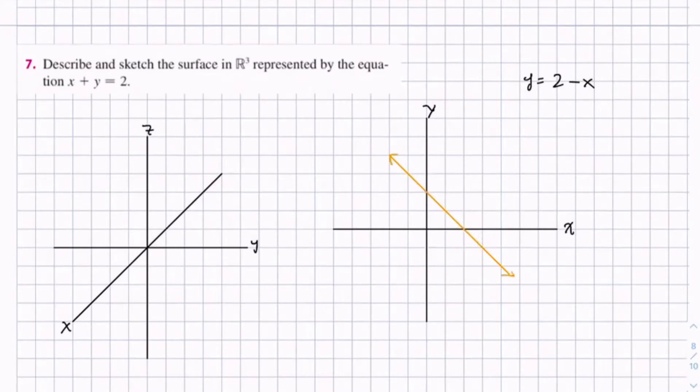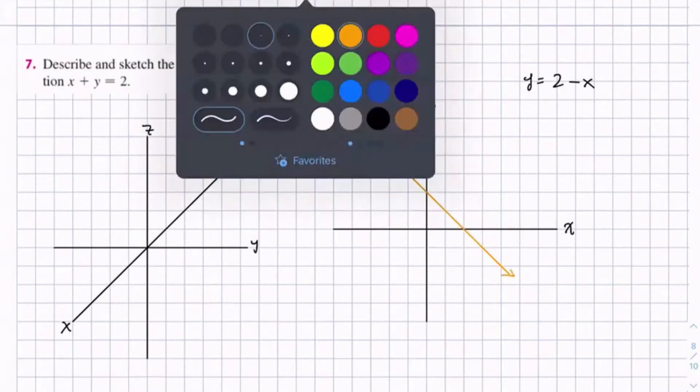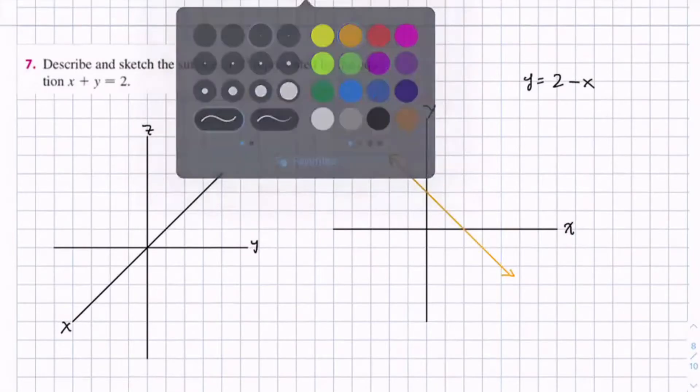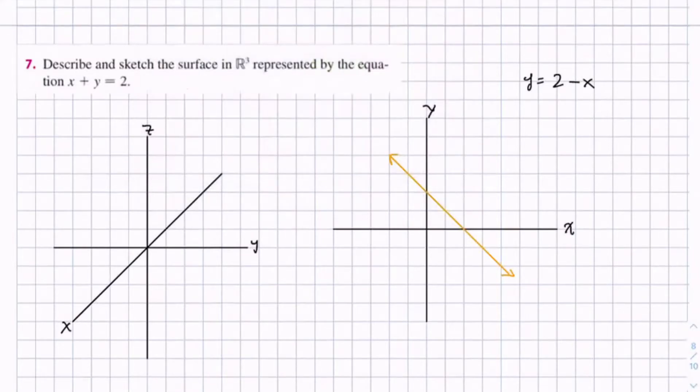So, what we just drew is the projection of x plus y equals 2 on the x, y plane. So on the x, y plane of the 3D graph, this is what it looks like.